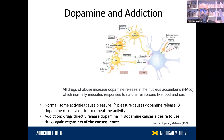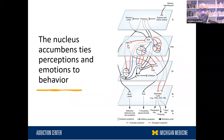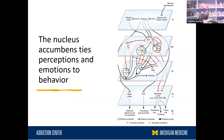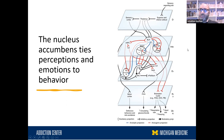The nucleus accumbens functions within a larger circuit whose purpose is to tie perceptions and emotions to behavior. It's kind of a translator where it takes the perceptions and emotions you have and translates them into behavior. If you encounter a stimulus or cue, it gets processed on different levels within this circuit. On the first level, for example, you may see a beer bottle and recognize, 'Oh, this is a beer bottle.'